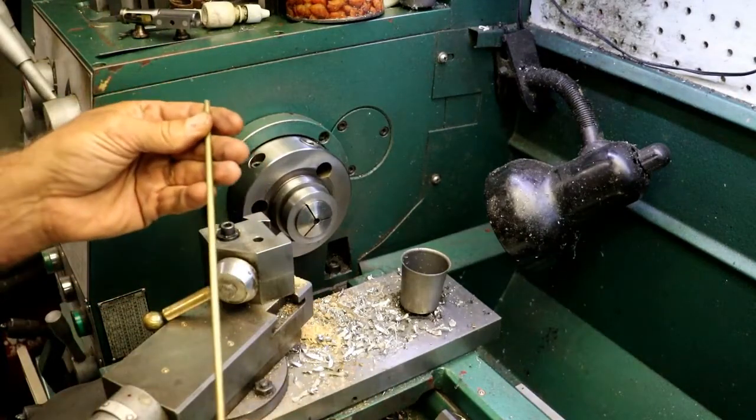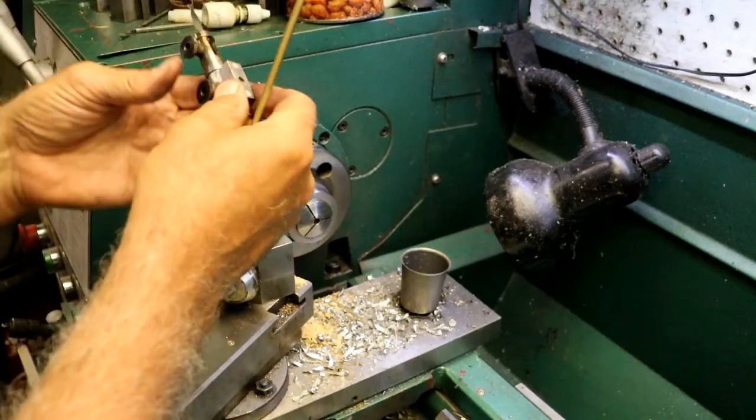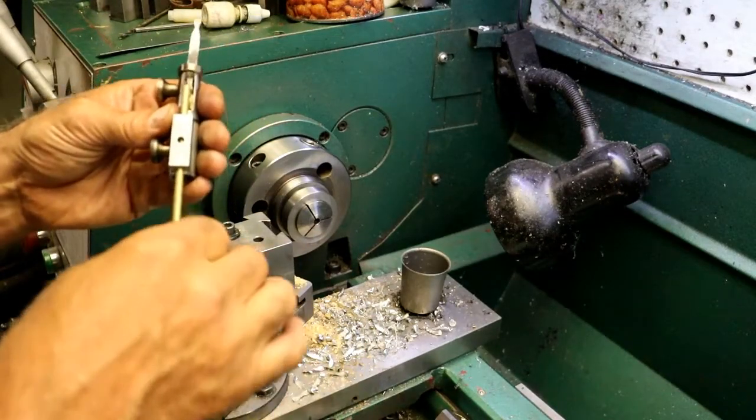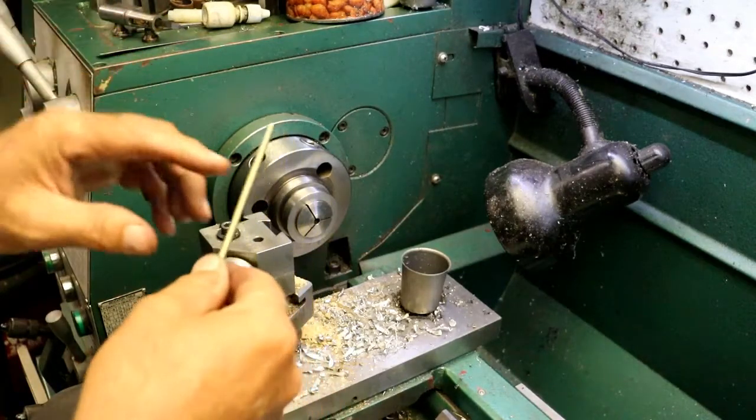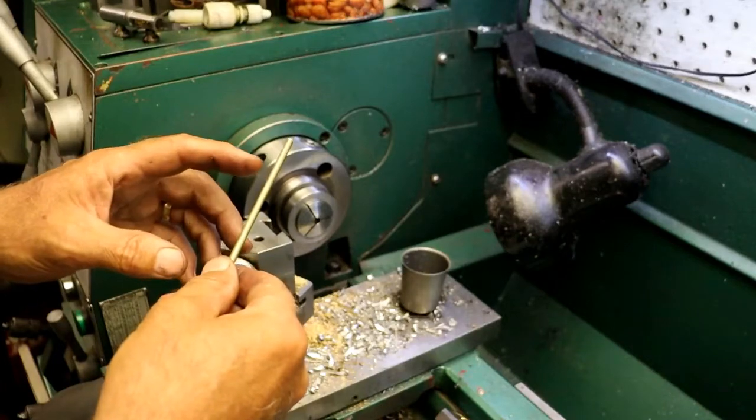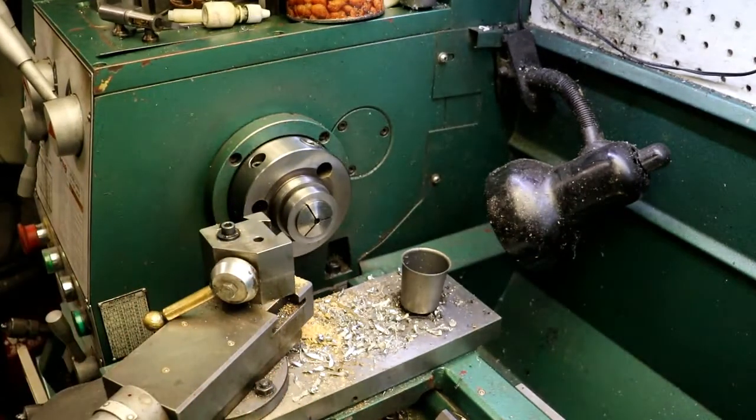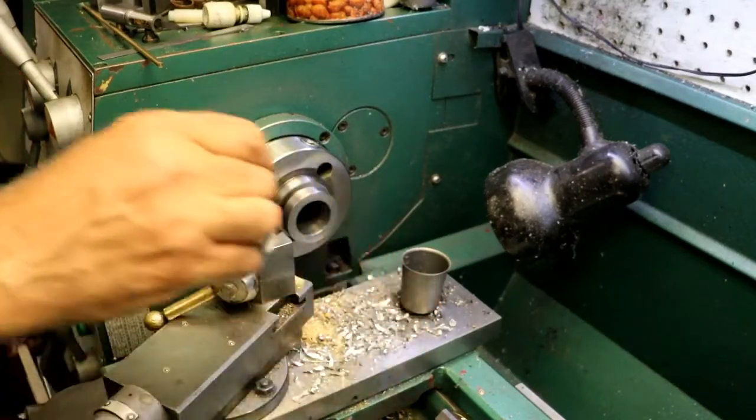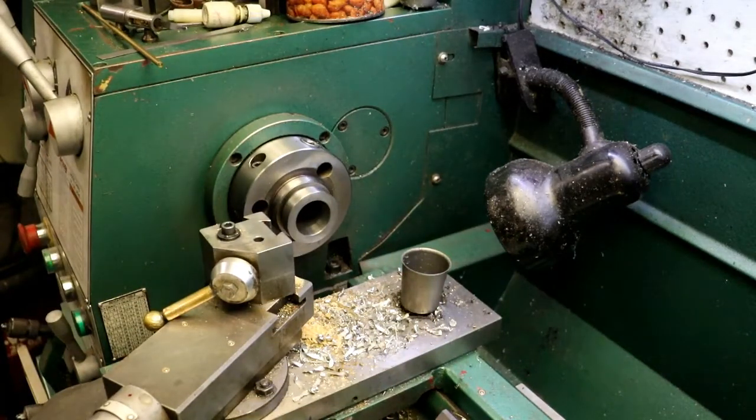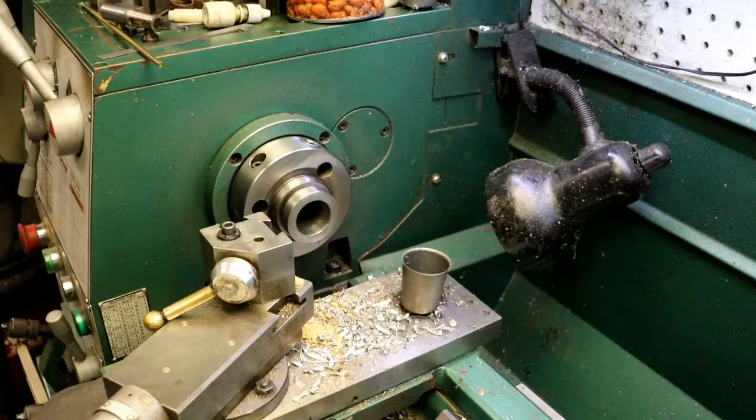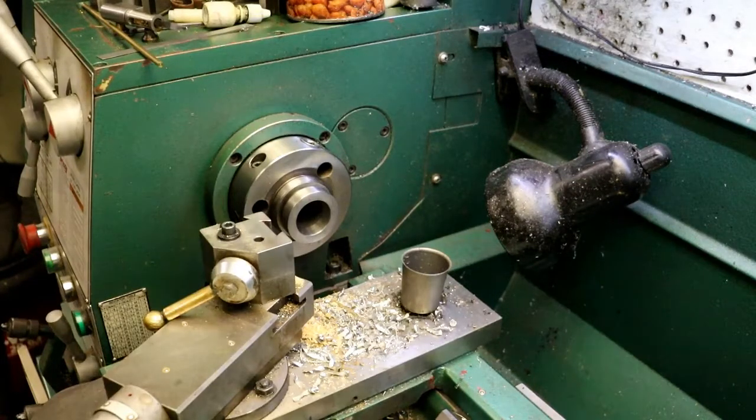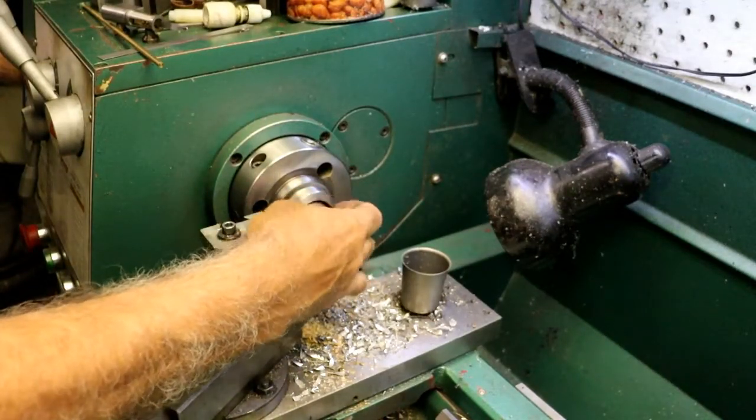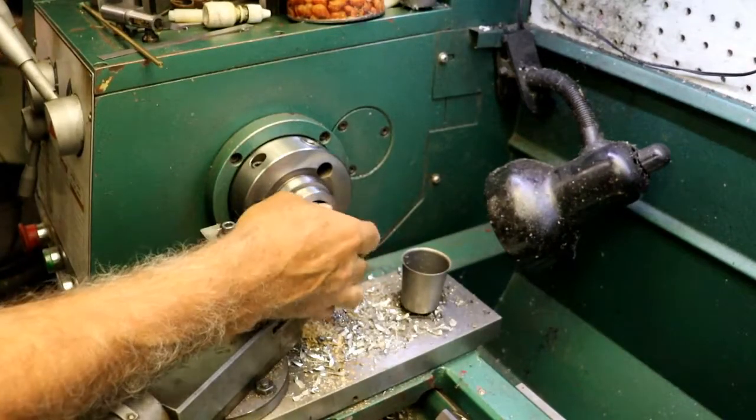I got some 3/16 brass drill rod. Oh yeah, slides through there nicely. So it's just a matter of cutting the end down in the middle and then parting it off. We need to get a 3/16 collet in there.